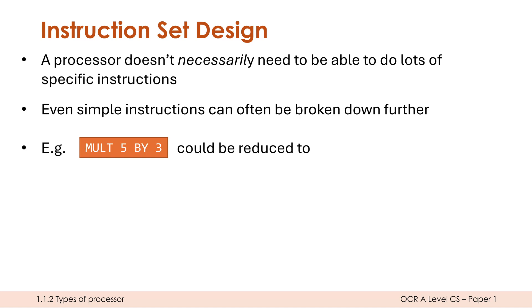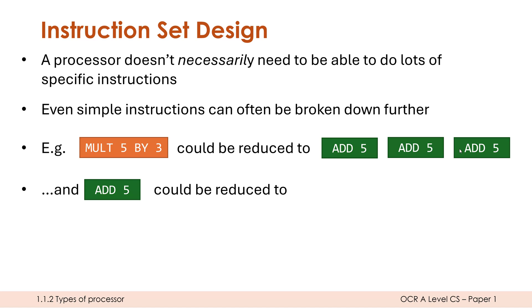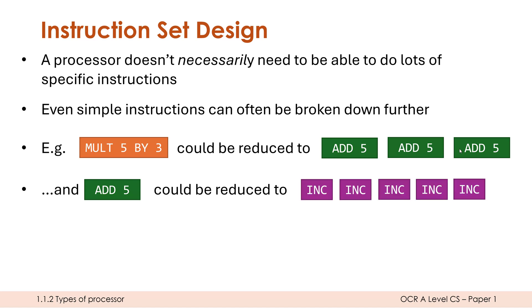If you were going to create a brand new CPU you would assume you'd include multiply, but actually multiply can be reduced further using multiple additions. So multiply 5 by 3 doesn't need multiply as a separate instruction — you could just use add three times. And even add could be broken down further; you could use increment (ink) five times, assuming ink adds 1 to the accumulator.